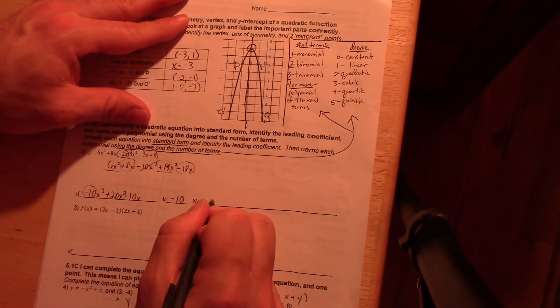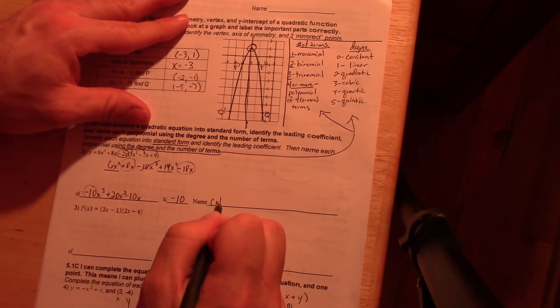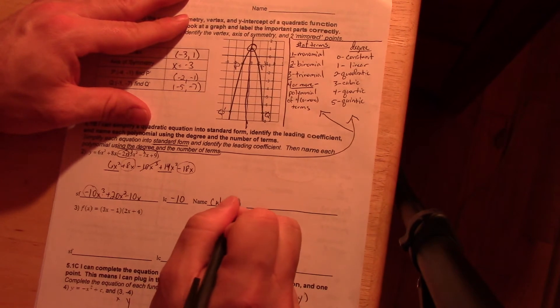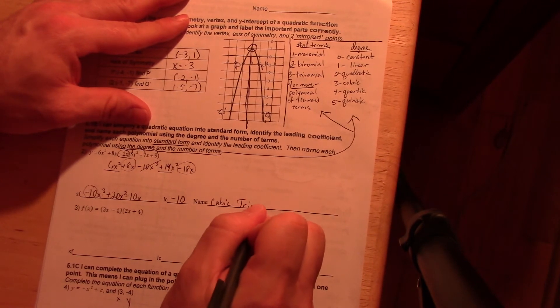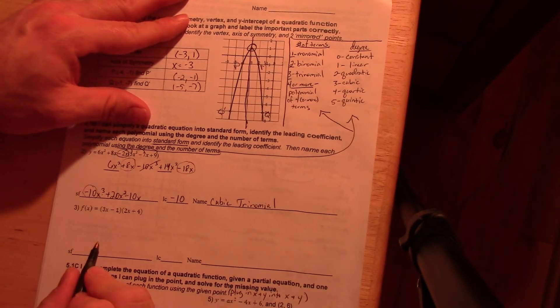And the name of this would be, well, if it's to the third degree, it is cubic, according to what we wrote up above. And trinomial, because it's three terms.